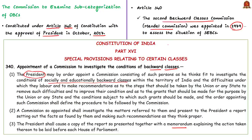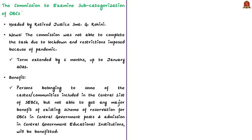The chairman of this commission was B.P. Mandal. The Mandal Commission assessed the situation of socially and educationally backward classes. Under Article 340, in October 2017, a commission to examine the sub-categorization of OBCs was constituted under the chairmanship of Retired Justice Srimati G. Rohini.